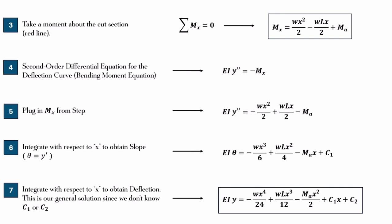All those signs, WX squared over two turned negative, and then WLX over two turned positive, and then MA turned negative. So, all I did was just plug it in. Step six was to integrate with respect to X, your distance, and that's going to give you the slope function. So, now we have EI theta is equal to all that good stuff, and it's just basic integrals. X squared was X cubed over three.